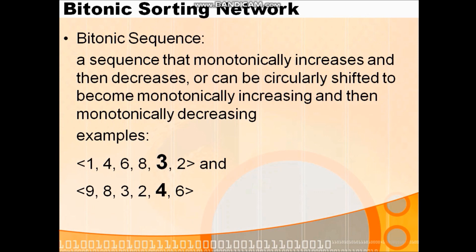Next example: 9, 8, 3, 2, 4, 6. Here 9 > 8 > 3 > 2, so the first four elements are in descending order. And the last two elements, 4 and 6, are in ascending order — 4 < 6. So this sequence first decreases then increases, and can be viewed as bitonic. That is why this sequence is also called a bitonic sequence. For more depth on bitonic sequences, refer to my previous video lecture.